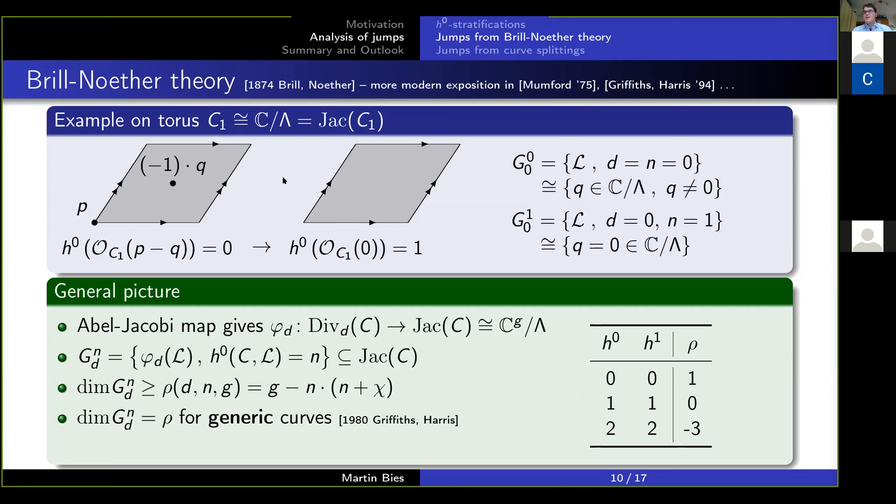And these are the dimensions of the spaces up here. Dimension 1 is everything in this parallelogram but the origin. That's a one-dimensional space. And the second space, this one here, is just a point. So its dimension is 0. And by this result, by Griffiths and Harris, we see we cannot have a bundle of degree 0 which has two sections on the torus. And this is then what Watari used in 2016 already and showed that from Brill-Noether theory you get an upper bound for H^0. And in this case you see you can only go up to H^0 equals 1.